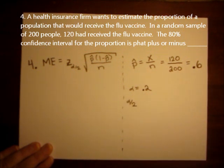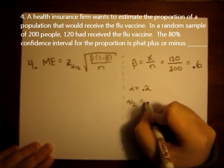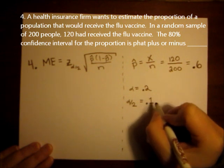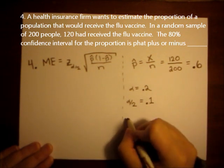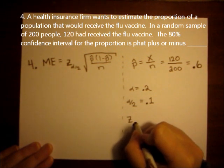The subscript is alpha over 2, so we need to find alpha over 2, which is 0.1. So we're looking for z alpha over 2, which is z of 0.1.